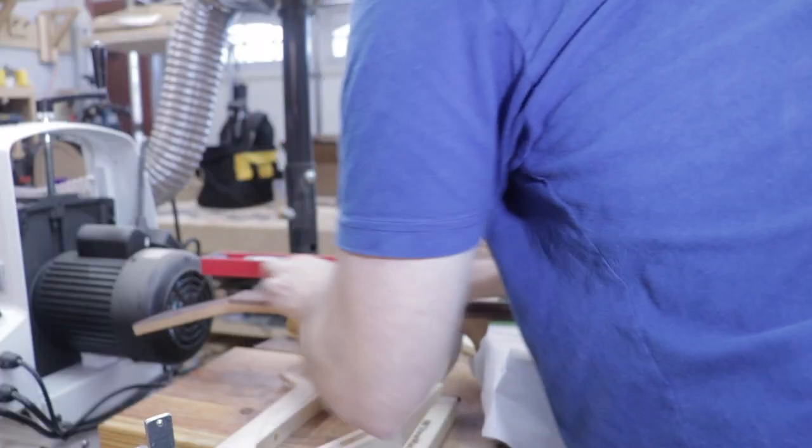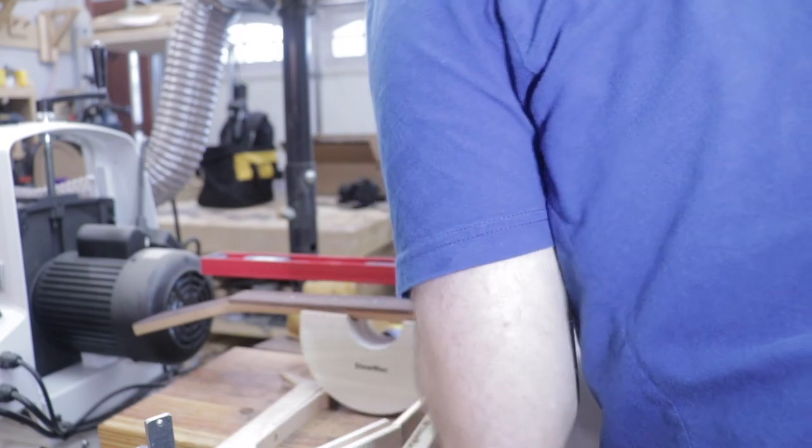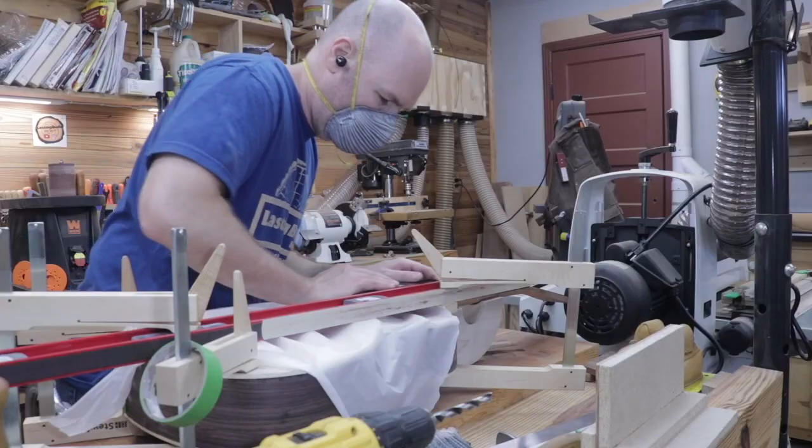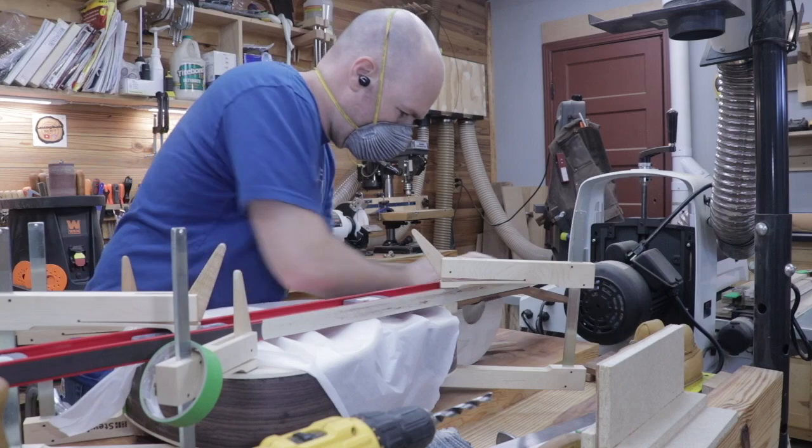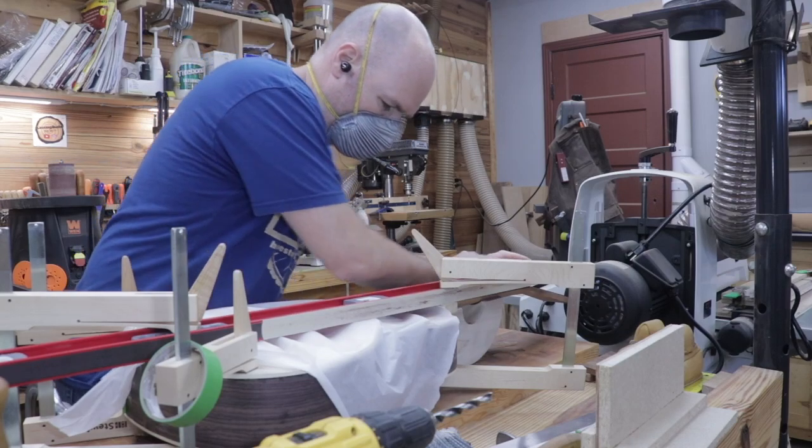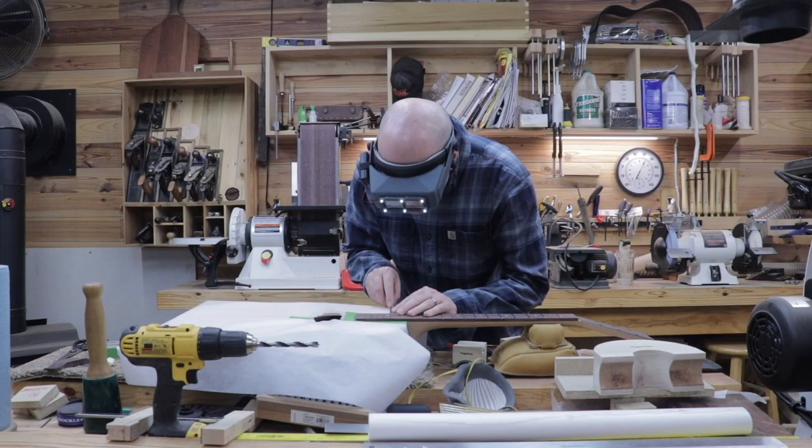For this, I used a radius block with 80-grit sandpaper and a DIY guide fence. Once the proper radius was achieved, I sanded it to 320 grit and then buffed with steel wool.